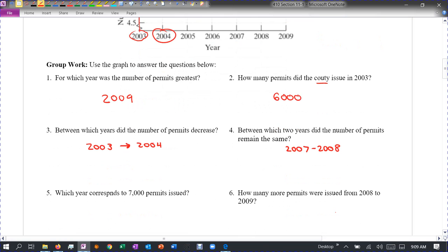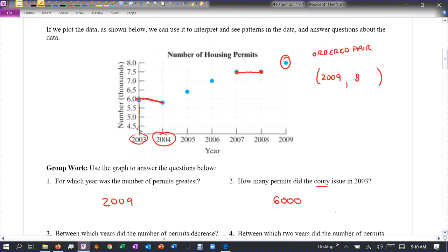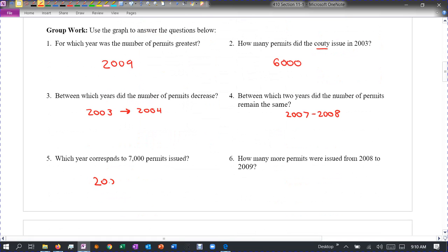For which year corresponds to 7,000 permits issued. So we want to look, where do we have, what year do we have 7,000? If we go over and go down, we can see that it would have been 2006. So 2006.